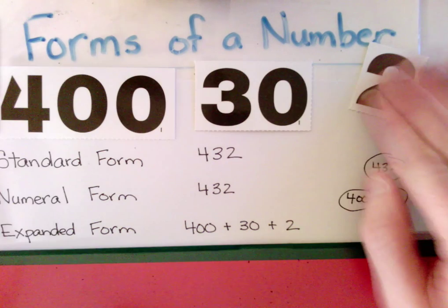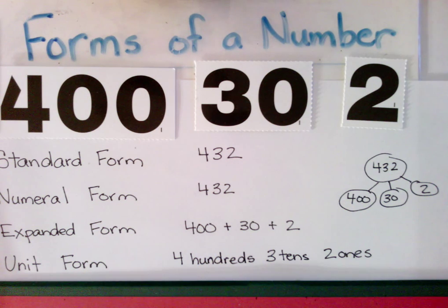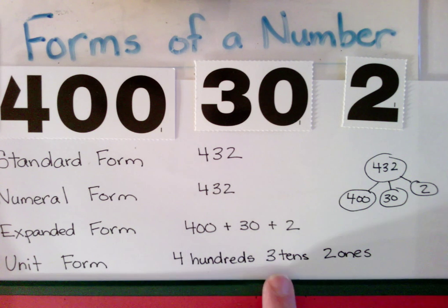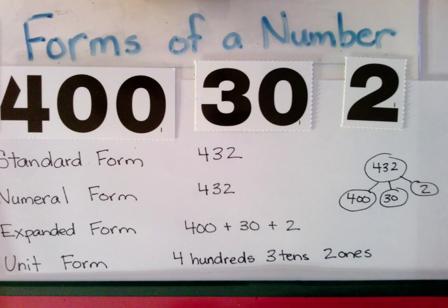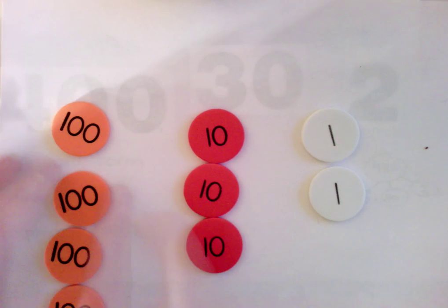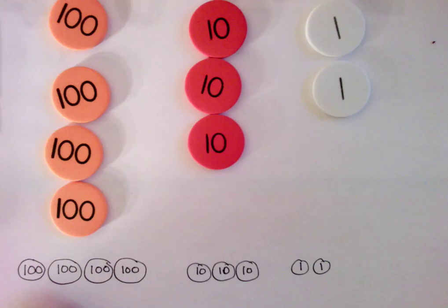Another form you might see is unit form. Unit form is when you see the actual units. So we have four hundreds, three tens, and two ones. You can see that in a picture or in concrete materials such as this. These place value disks represent 432 because you see four hundreds, three tens, two ones. That's unit form.